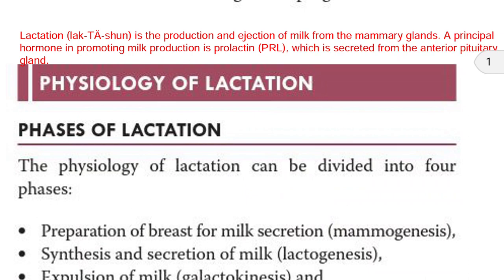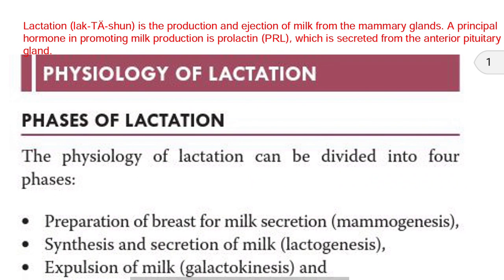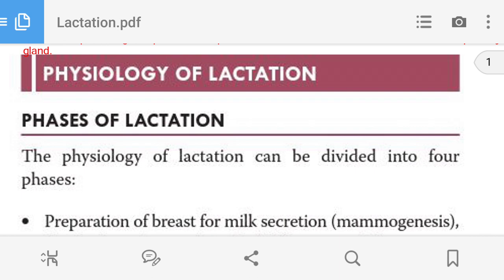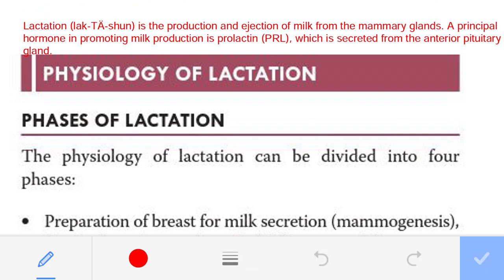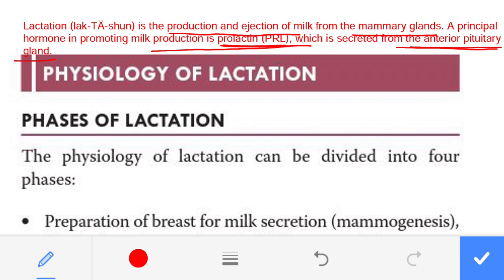First, this is the definition of lactation — it is a simple definition. Lactation is basically the production and ejection of milk from the mammary gland. The principal hormone responsible for the production of milk is prolactin, and this prolactin hormone is secreted from the anterior pituitary.